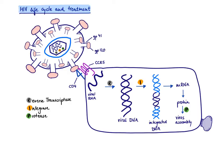HIV has on its surface a glycoprotein GP120 that binds to the CD4 molecule. Once this interaction occurs, there is a conformational change so that the co-receptor, most likely CCR5 (chemokine receptor 5), also binds to GP120. This leads to fusion of the virus with the plasma membrane, allowing the virus to release its RNA into the host cell.